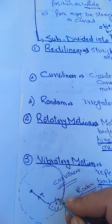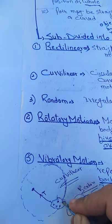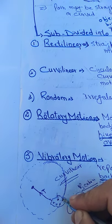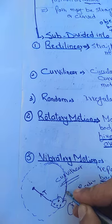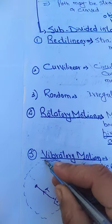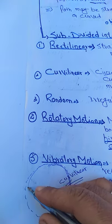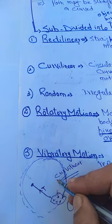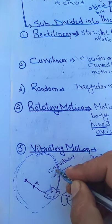Each particle of the stone is moving parallel to each other as a whole, but the path is a circular path. So this type of motion is called curvilinear motion.